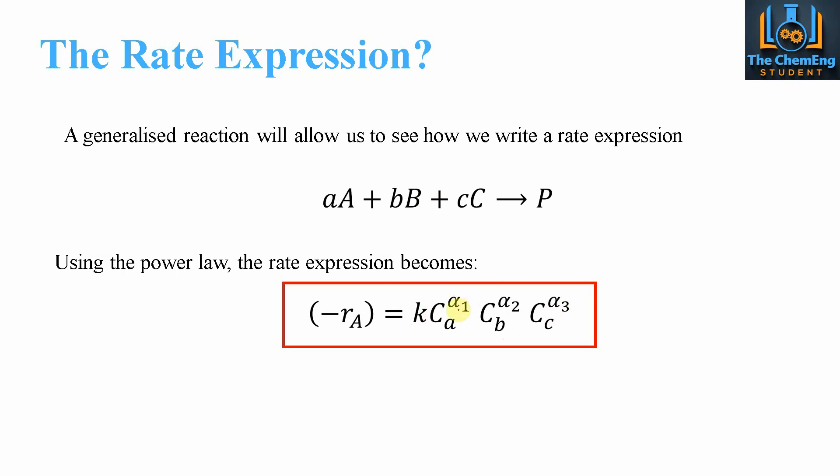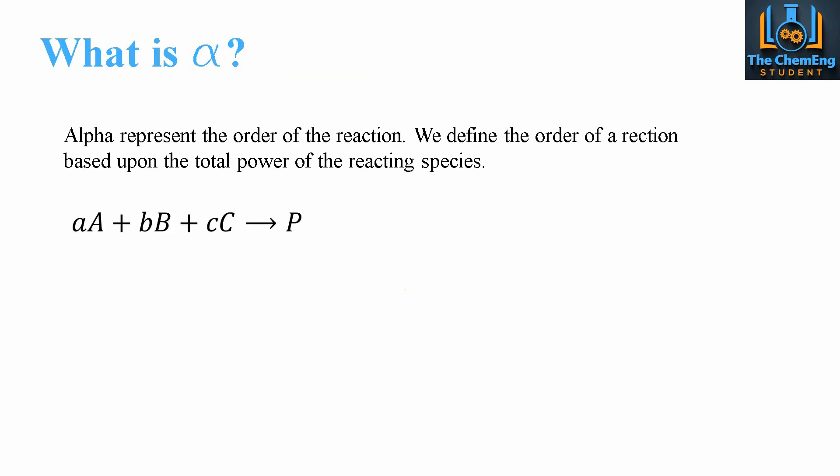These alphas we'll discuss in just a second, but the capital CA, CB, CC are the concentrations of component A, B, and C. The lowercase letters denote the stoichiometric coefficients, and the stoichiometric coefficients are very important for determining the rate of reaction.